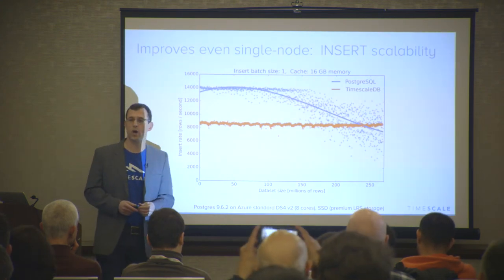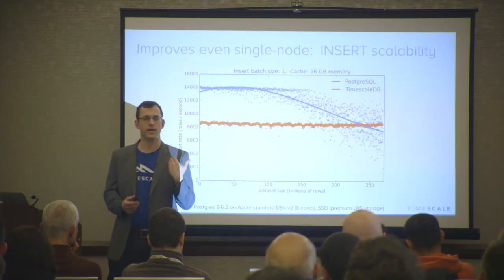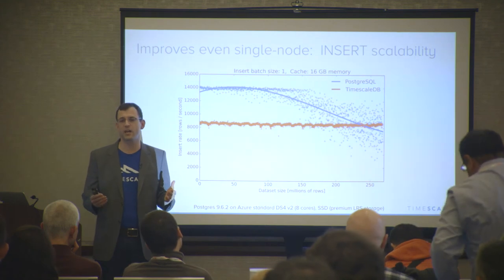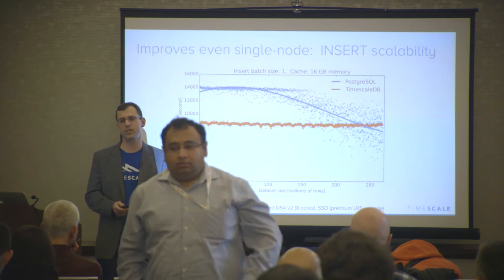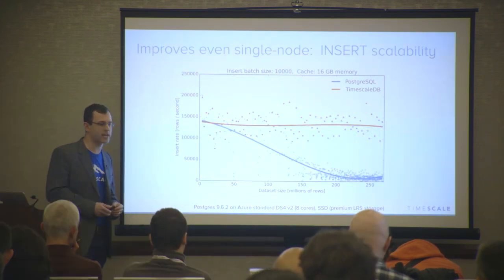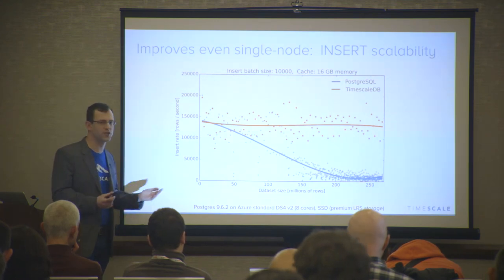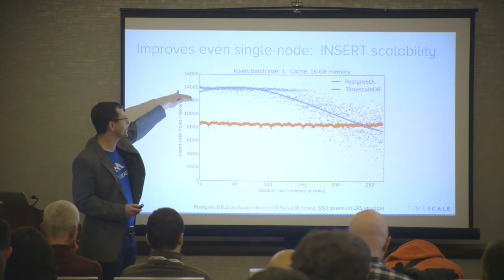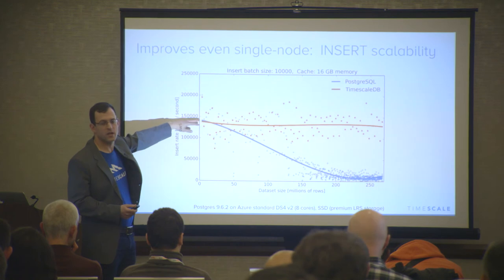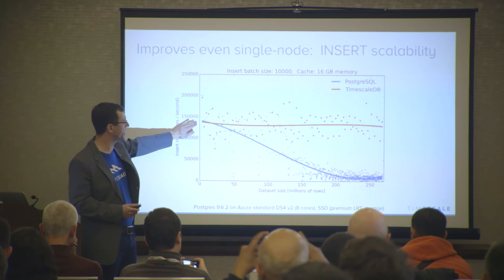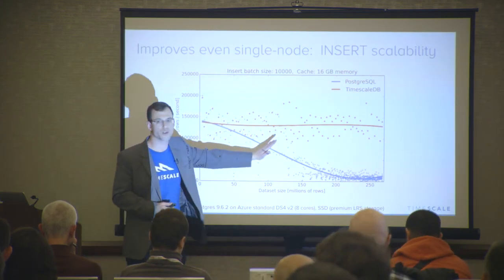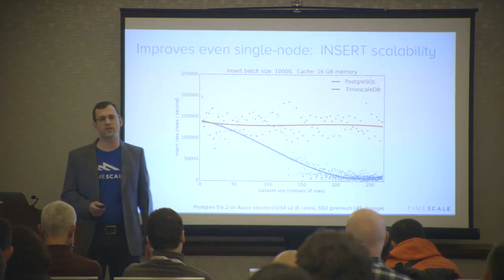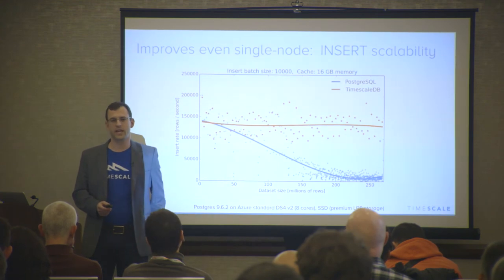In production settings you might have a queuing system before your database — Kafka or a streaming engine — and typically insert in batches rather than one row at a time. Inserting in batches of 10,000 rows takes you from about 15,000 to about 150,000 inserts per second — roughly 1.4 million metrics per second. This pushes out the problem a bit with Postgres, but we still see a performance cliff at 50–100 million rows. TimescaleDB continues to maintain basically constant throughput across that period.